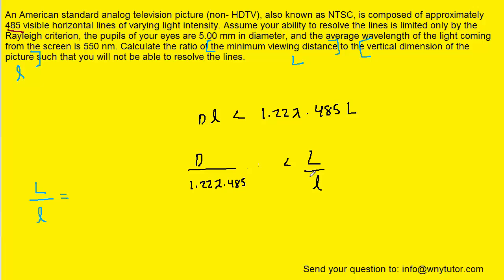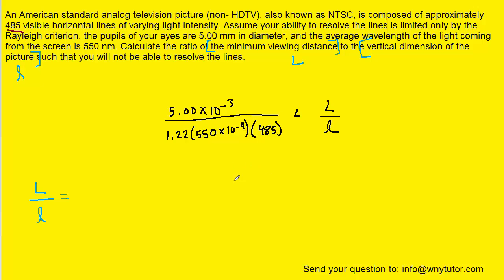So we have successfully isolated the ratio that we wanted and now we can plug in the known values. Remember that uppercase D was the diameter of the pupil or the opening through which the light was coming in and that was given to us in millimeters. So just make sure you change that into meters and then we have the wavelength of light was given to be 550 nanometers. So we'll multiply that by 10 to the minus 9 to convert it into meters.